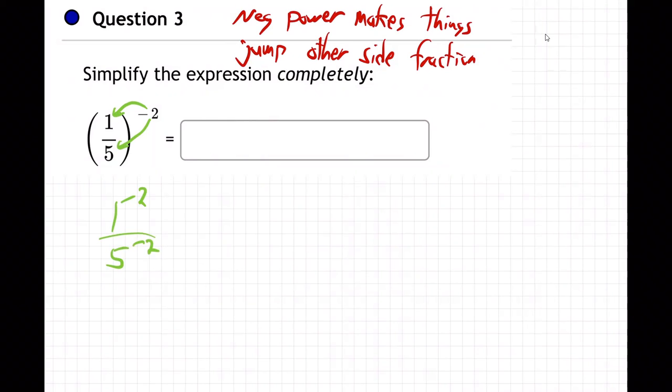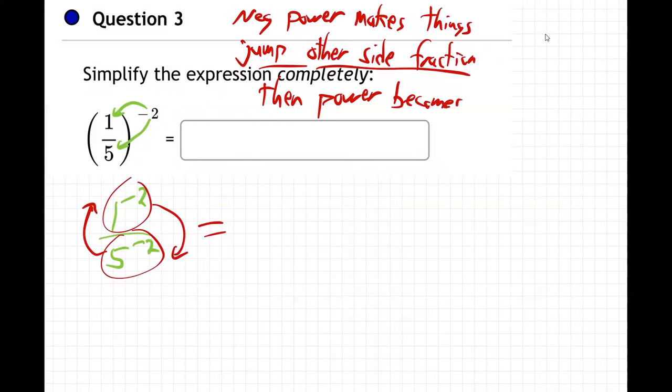And then that guy's going to go up, and that guy's going to go down. Why? Because they're negative powers. Negative powers make things jump to the other side of the fraction. Then the power becomes positive.